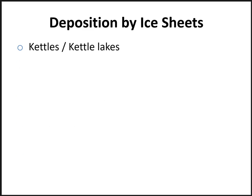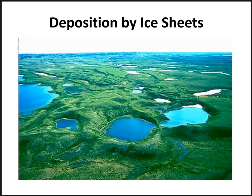Continuing with depositional features, there are kettles — pits in the surface that may or may not be occupied by water. They form when isolated blocks of ice are left behind by a retreating glacier and become surrounded by till or stratified drift. After a period of time, that ice block melts away, leaving behind a hole called a kettle lake. Here you can see a bunch of kettle lakes in the Northwest Territories of Canada.